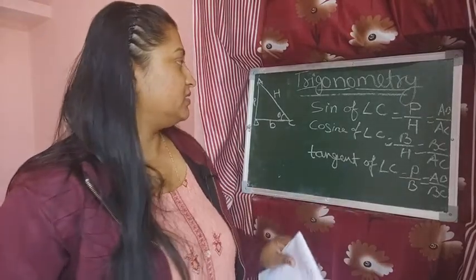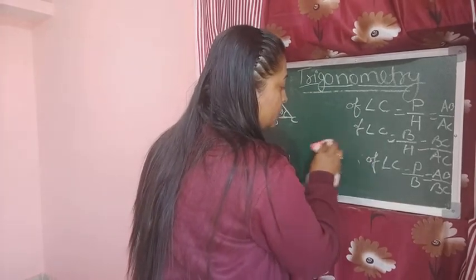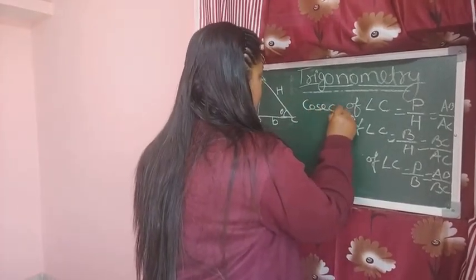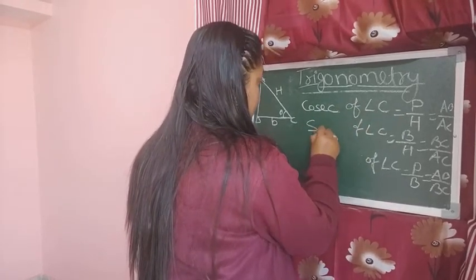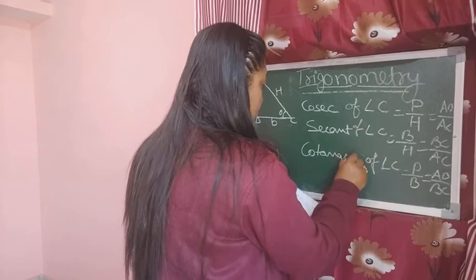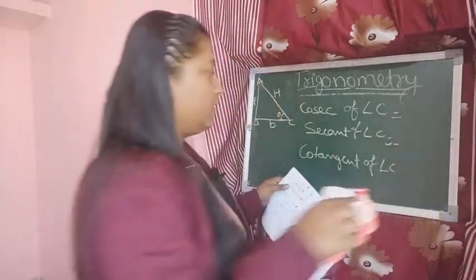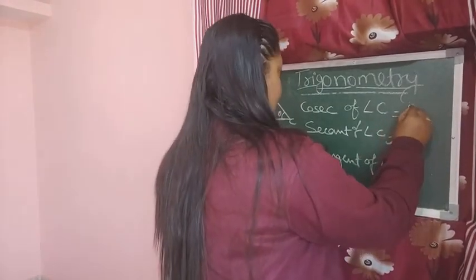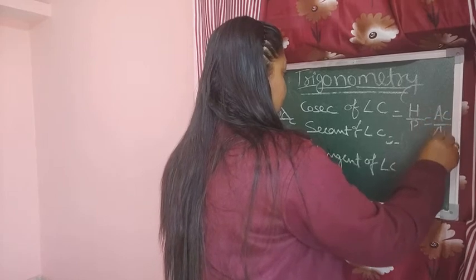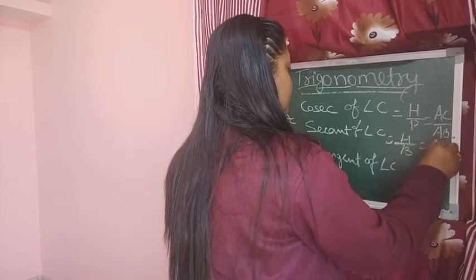Now we come to the other three. That is cosec of angle C, sec of angle C, and cotangent of angle C. Cosec is hypotenuse by perpendicular — that is AC by AB. Sec is hypotenuse by base — that is AC by BC. And cotangent is base by perpendicular.